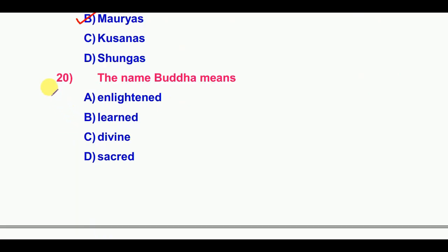Twentieth question: The name Buddha means 'the Enlightened.'